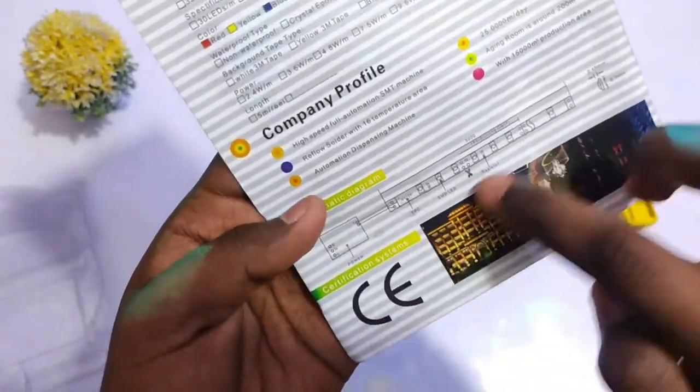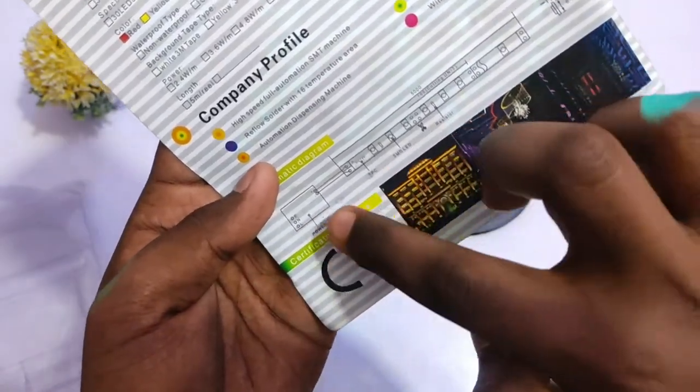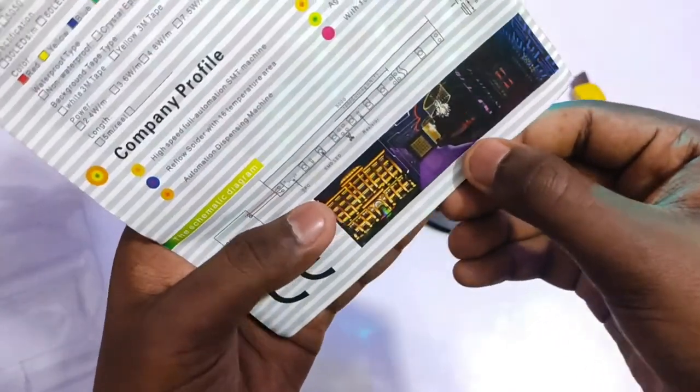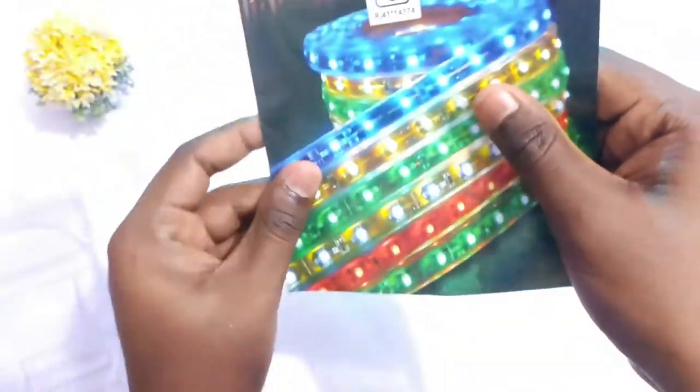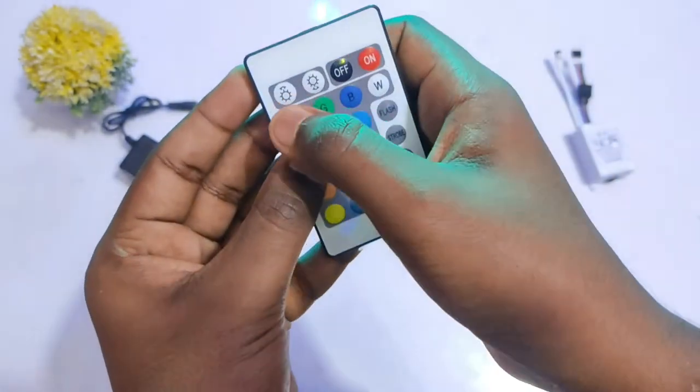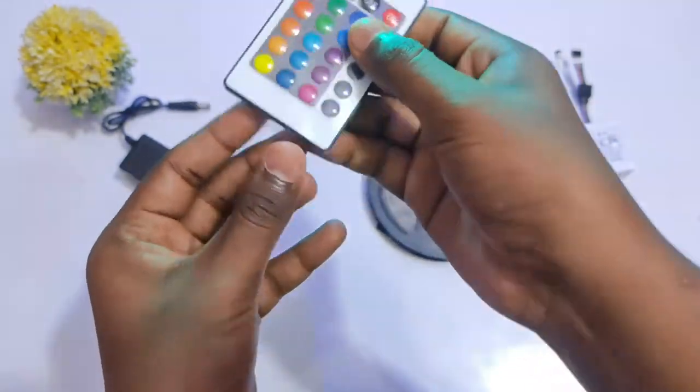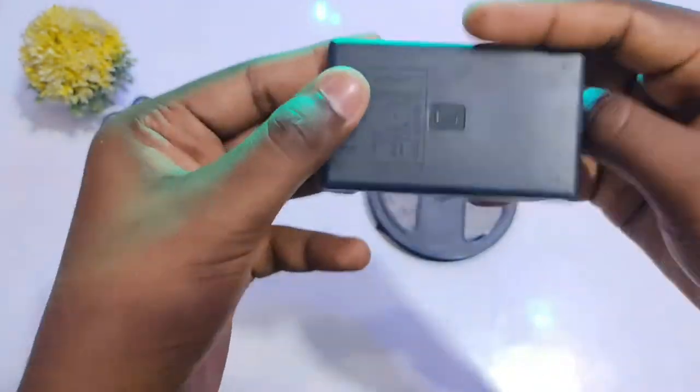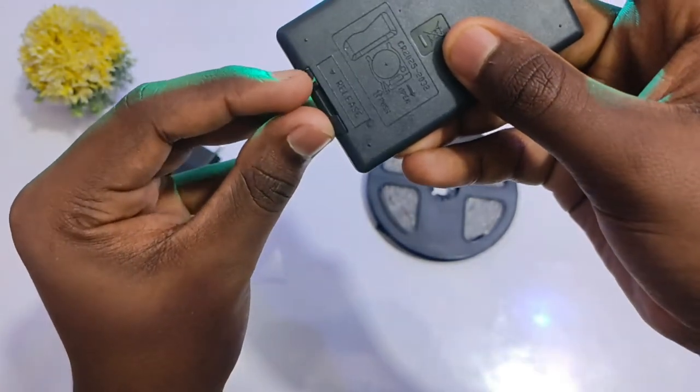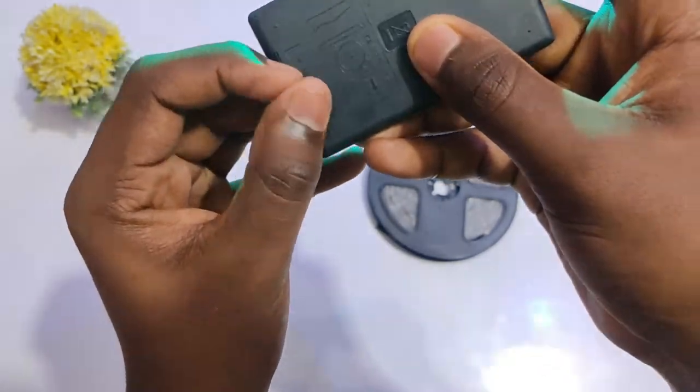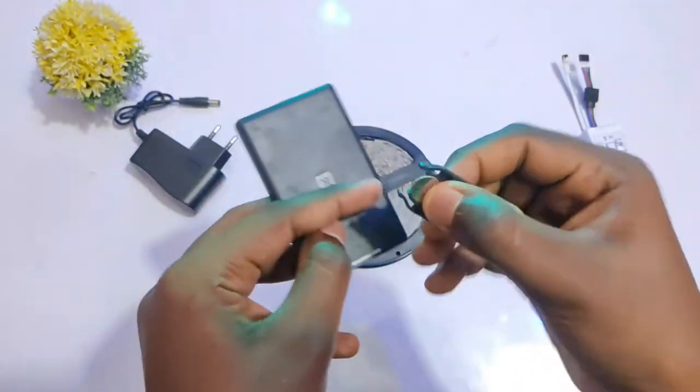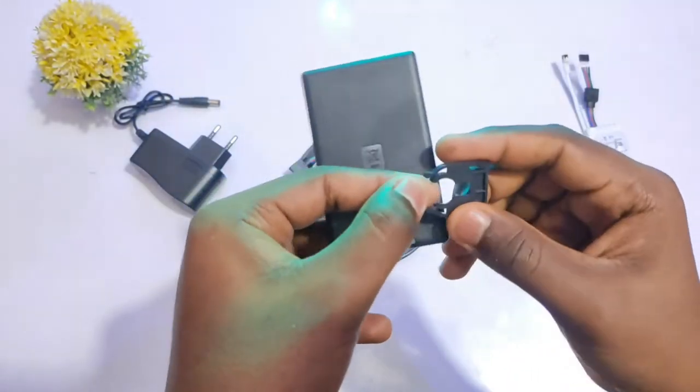This strip is available with a remote. The quality of the remote is very good. Here I will remove the battery and show you. To remove the battery, it is very easy. We just need to pull the button to the right and pull it down. It will easily come out. The battery the company provides is 3 volts. If the battery is dead, you can also buy it in outside shops.